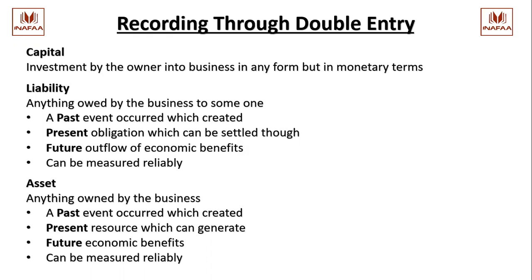These are the comprehensive definitions of liability and asset. The remaining two are income - anything earned by the business; if a business sells something, whatever it receives in return is the income. And if the business incurs some costs, those are the expenses of the business. Moving to the next slide.